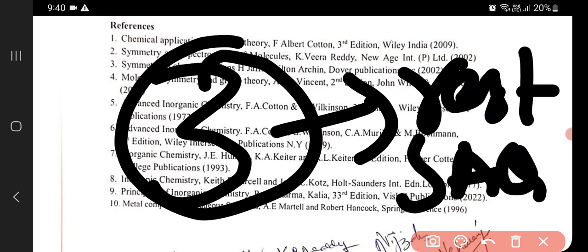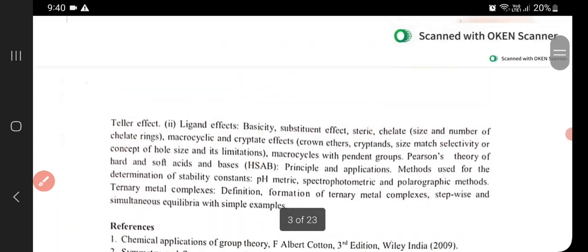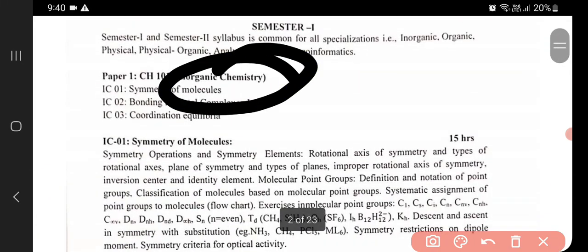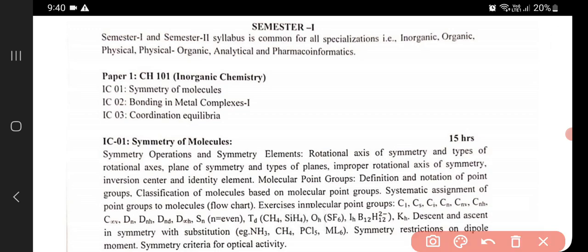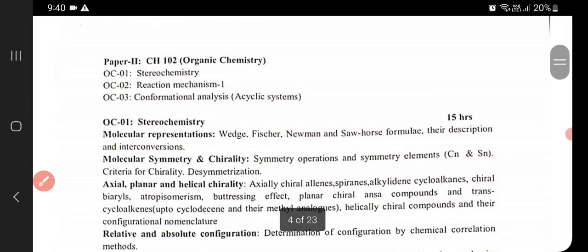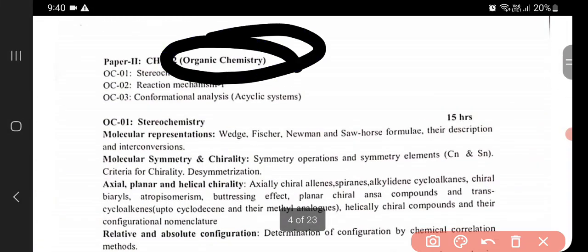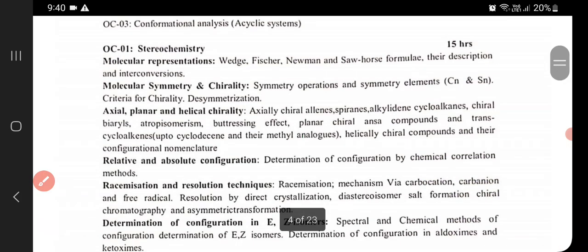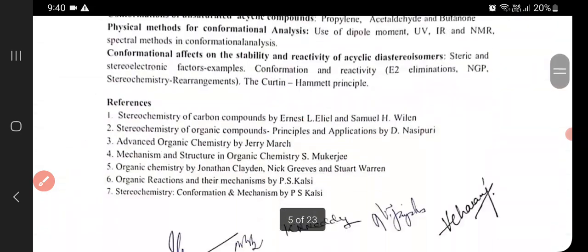In Paper 1, you'll have Inorganic Chemistry with those three units. Now, we'll talk about Paper 2, which is Organic Chemistry. There you'll be having three chapters: Stereochemistry, Reaction Mechanism, and Conformational Analysis.